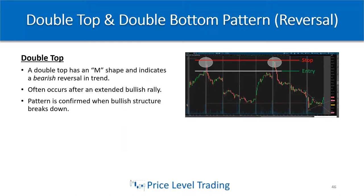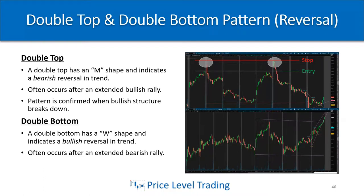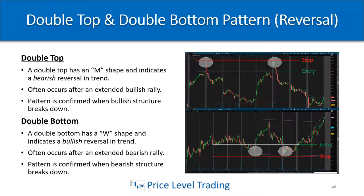A double bottom has a W shape and indicates a bullish reversal in trend. It often occurs after an extended bearish move — there's a lack of sellers to keep pushing price down, or buyers came in and caused price to hold the level. This pattern is confirmed when bear structure breaks down. You can see the two circled double bottom areas — we had a low, came back two or three days later to test it again, held, and then the very next day broke above what was resistance now support for a push to the upside. Keep the stop below those double bottom areas to give some room.